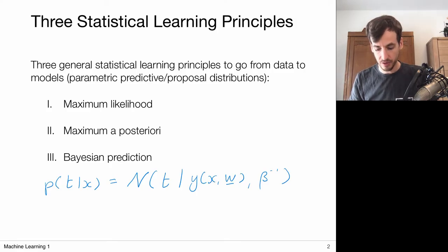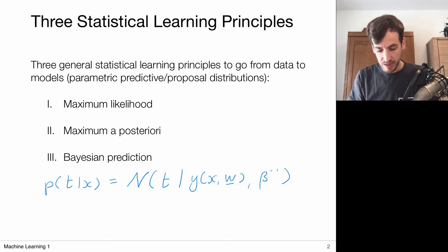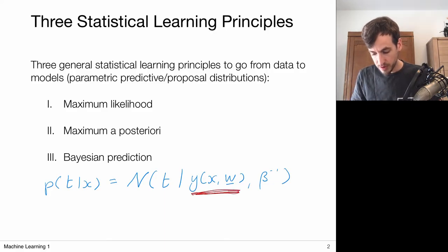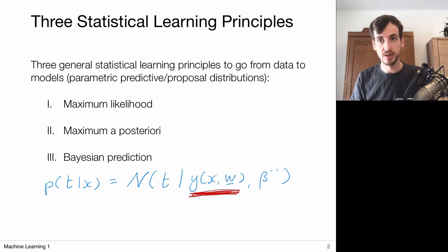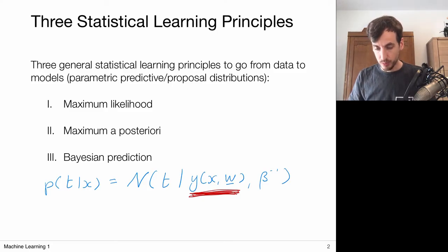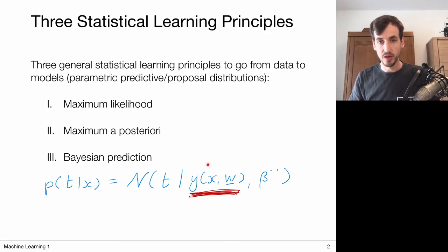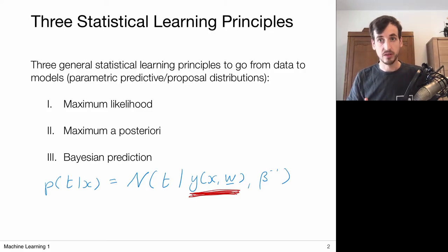In the previous lectures, we sort of skipped over this part — we said there exists such a model and we're going to optimize it using these three principles. But we didn't go into full details on how to obtain these actual models, y of x parameterized by w. And that's what we're going to do today.